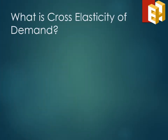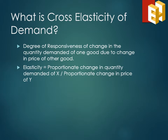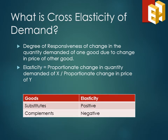Next, we have the cross elasticity of demand. It is the degree of responsiveness of the change in quantity demanded of one good with the change in price of another good. Mathematically, it is the proportionate change in quantity demanded of X divided by the proportionate change in price of Y. There are two types of related goods: substitutes, which are consumed in place of one another, and complementary goods, which are consumed together. For substitutes, elasticity is positive, that is greater than zero; and for complements, elasticity is negative, that is less than zero.